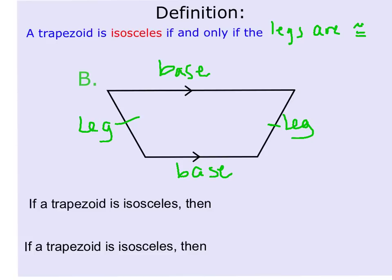A trapezoid is isosceles if the legs are congruent. There are a couple other things about an isosceles trapezoid. If a trapezoid is isosceles, then the base angles are congruent. The base angles would be the two at the bottom.